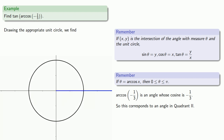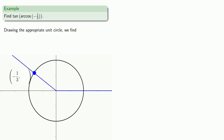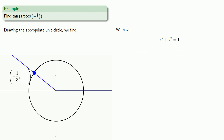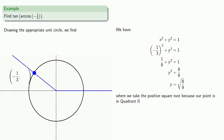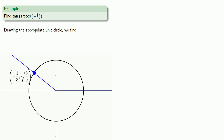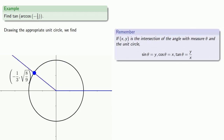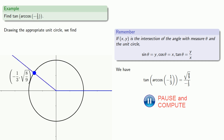Let's draw our picture. We know the cosine value, which means we know the x coordinate of our point. Since this is the unit circle, every point satisfies x squared plus y squared equals 1. Our cosine value is negative 1 third — that's our x value — so we can find our y value. We take the positive square root because our point is in quadrant 2. Since we want our tangent value, that's going to be y divided by x, and so we find the tangent of the arc cosine, which we can simplify.